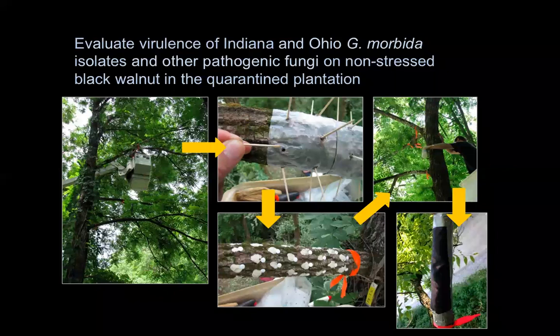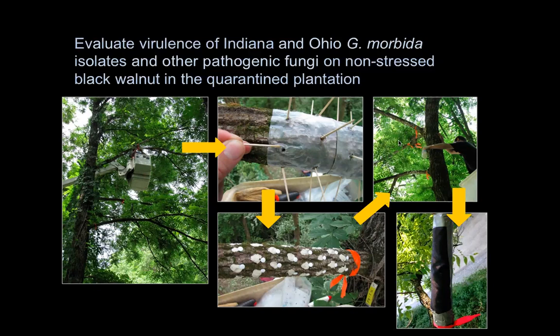We've now started to inoculate branches of these trees with Fusarium and also with Botryosphaeria and with Geosmithia. This is done through branch inoculations where inoculum is put into inoculation sites in a density similar to what we found in our 2014 study. Instead of using a toothpick inoculation technique, we now pipette the inoculum into holes drilled into the bark. They are then sealed with plumber's putty and left for the growing season.